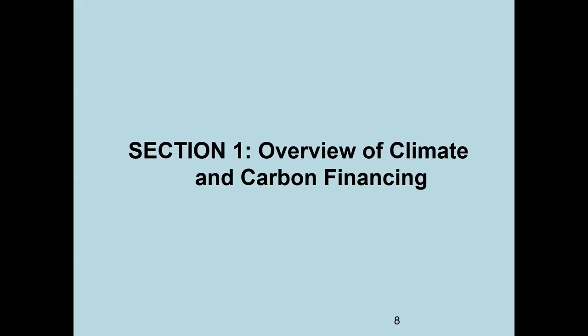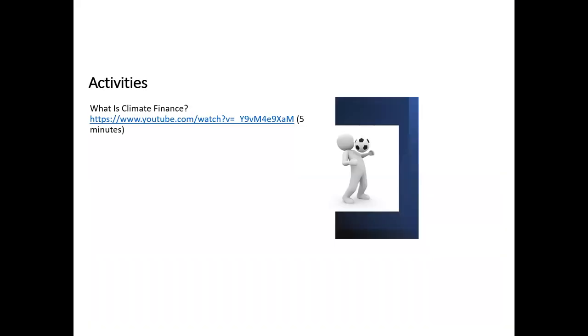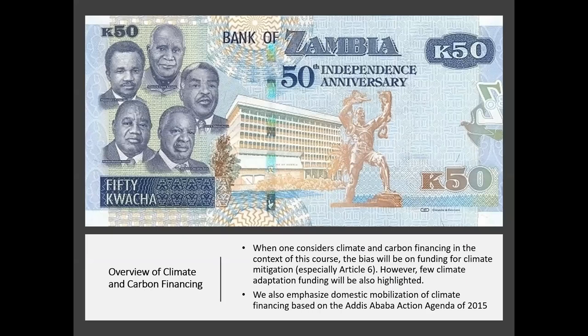Let's move on to section one on the overview. There is an interesting five-minute YouTube clip where you can view what climate finance is. When one considers climate and carbon financing in the context of this course, the bias will be on funding for climate mitigation, especially Article 6. However, full climate adaptation funding will also be highlighted. We also emphasize domestic mobilization of climate financing based on the Addis Ababa Action Agenda of 2015.